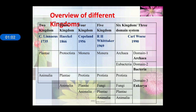Next is four kingdom classification, proposed by Copeland, in which Monera, Protista, Plantae, and Animalia were included. Then later on, five kingdom classification was proposed by R.H. Whittaker, in which Monera, Protista, Fungi, Plantae, and Animalia were there. Further, six kingdom classification or three domain system was introduced by Carl Woese, in which Monera is further subdivided into Archaea and Eubacteria.